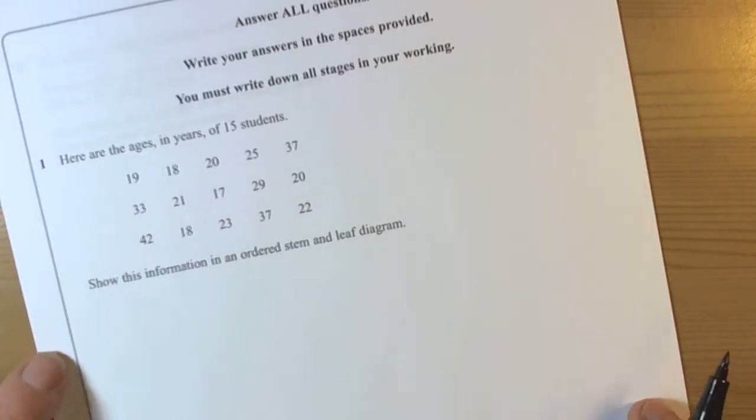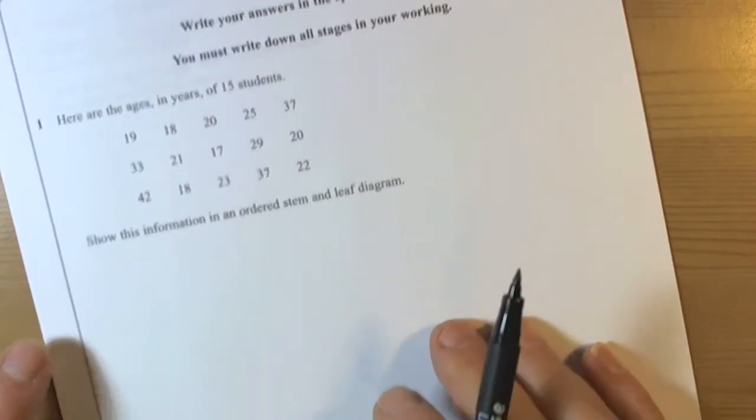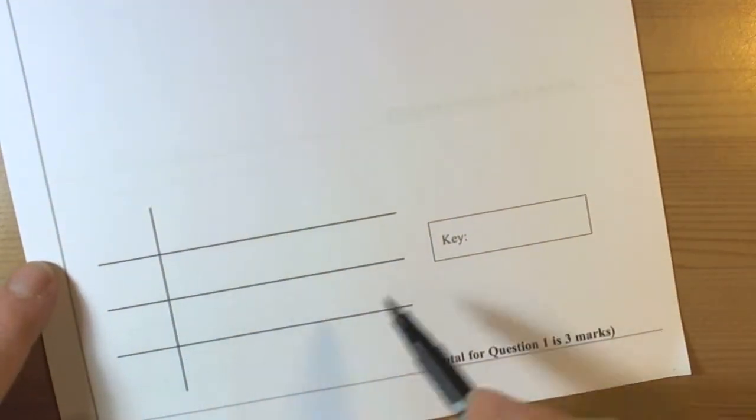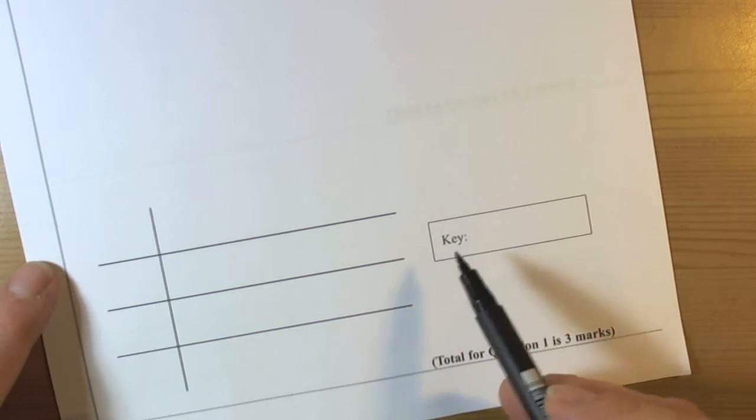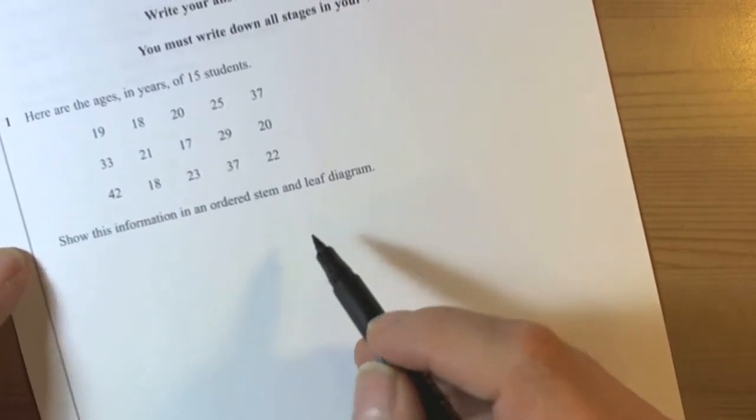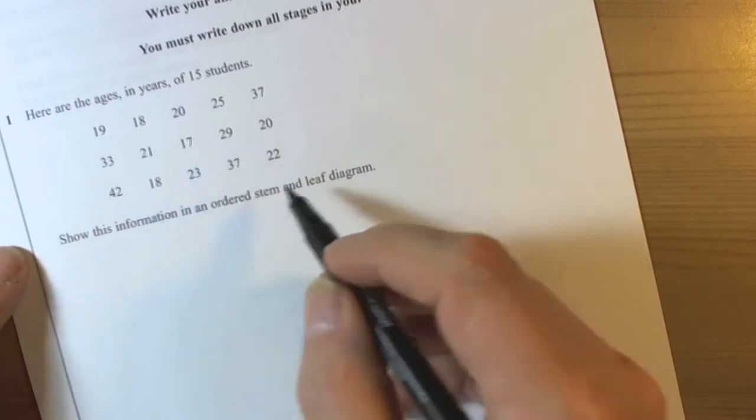Okay, for a stem and leaf diagram question, we recognize that we have to fill the table in. A table is conveniently drawn for us, and we should always remember that we have to do a key for the stem and leaf diagram. The idea of the stem and leaf diagram is that we split the numbers given to us up into their component parts.